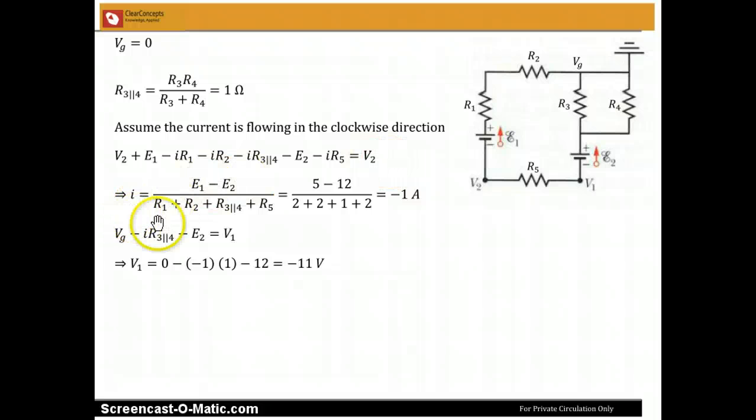Rearranging things, we get I is equal to E1 minus E2 divided by R1 plus R2 plus R3 parallel 4 plus R5. And plugging in the values, I get 5 minus 12 divided by 2 plus 2 plus 1 plus 2 which is minus 1 ampere.